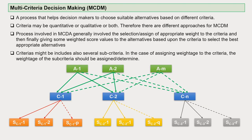MCDM is a process that helps decision makers choose a suitable alternative based on different criteria — C1 to Cn, any number of criteria. Criteria may be quantitative, qualitative, or both. Therefore, there are different approaches used under MCDM. This process generally involves assigning an appropriate weight to each of the criteria and then giving weighted scores to the alternatives based on those criteria.